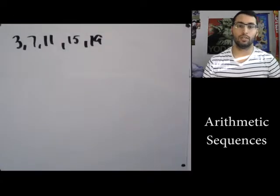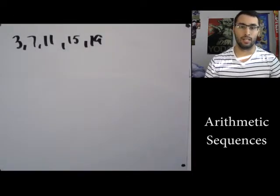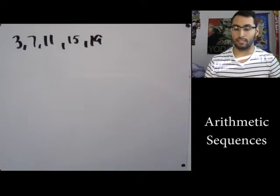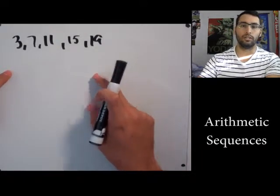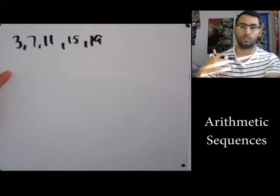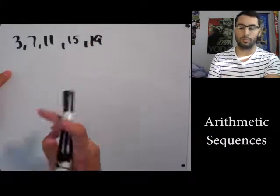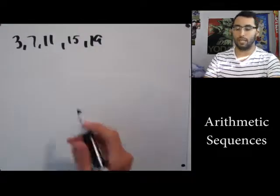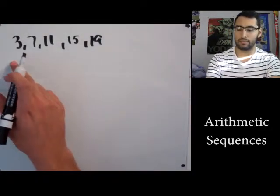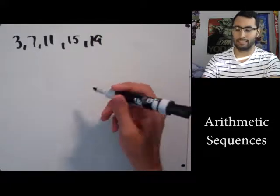Good morning class, this is going to be on arithmetic sequences. An arithmetic sequence is a sequence of numbers where you're either adding or subtracting by a constant term to get every number in the sequence. The sequence we have is 3, 7, 11, 15, 19.